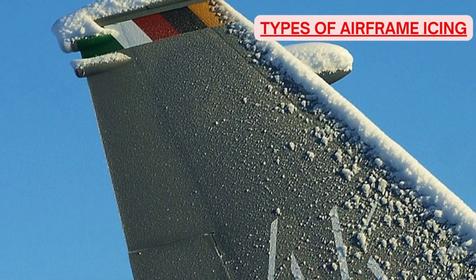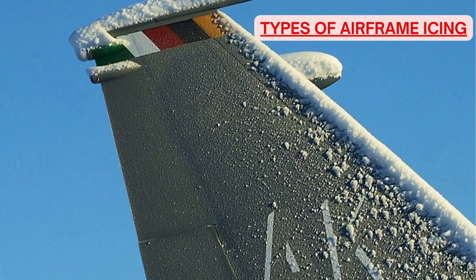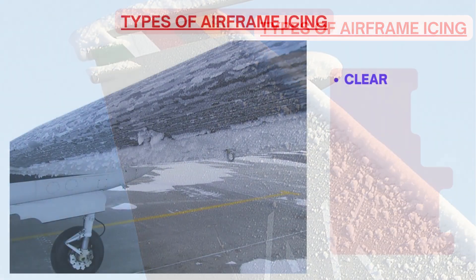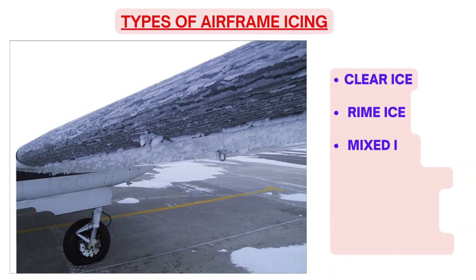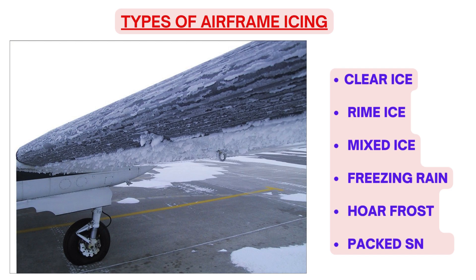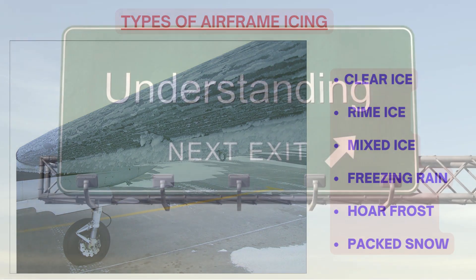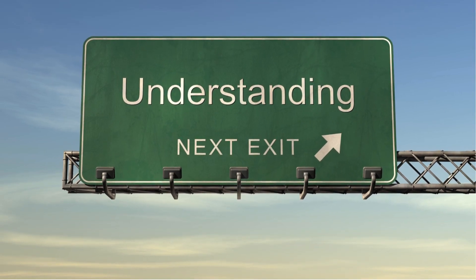There are a total of 6 types of airframe icing: clear ice, rime ice, mixed ice, freezing rain, hoar frost, and packed snow. They are all icing, but distinctly different from each other, and we will make all efforts to understand and differentiate them with clarity.